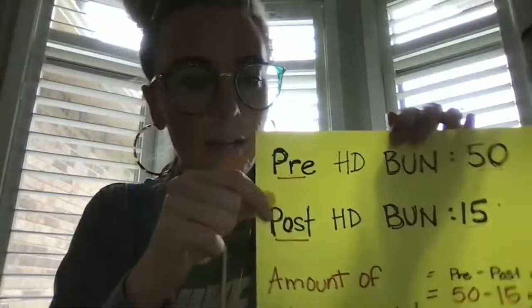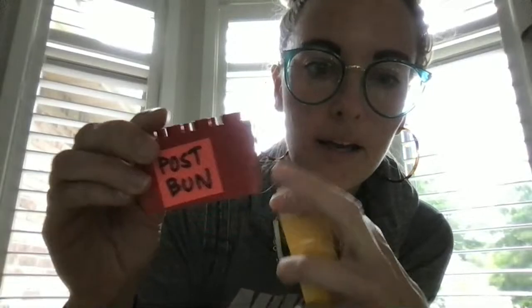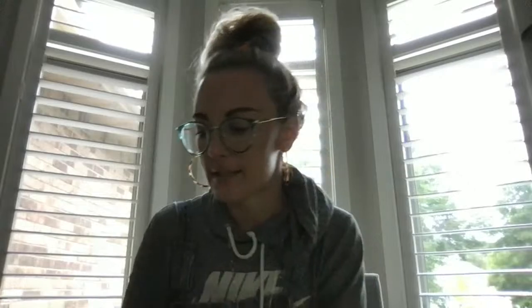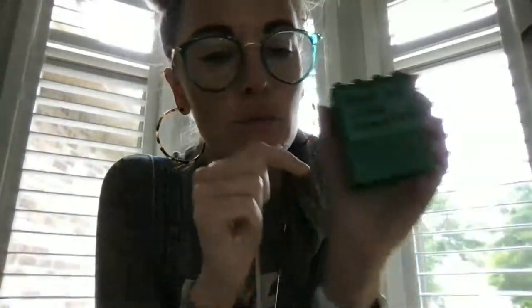So we have the pre-BUN and the post-BUN. The pre-BUN is 60 — I'm showing this with Legos. And then we have the post-BUN, and that's 20. So we need to subtract — reduction means subtraction. 60 minus 20 is 40. So now we have the amount of urea removed during dialysis. The BUN dropped by 40 points. We removed 40 BUN.